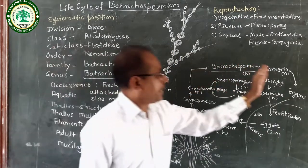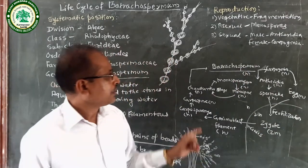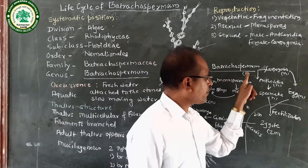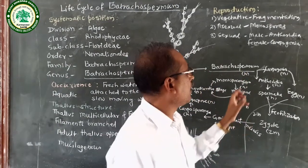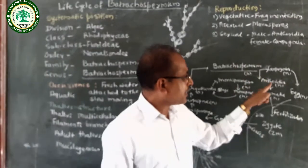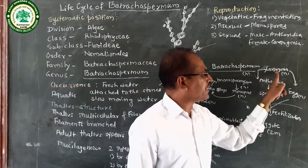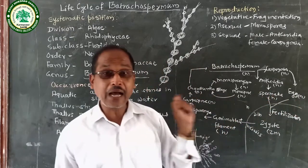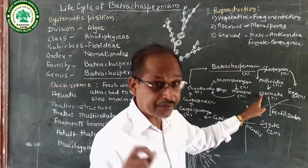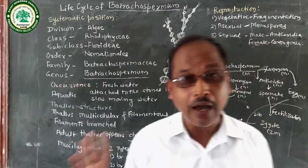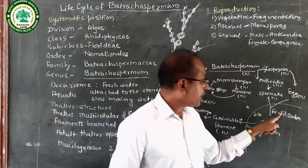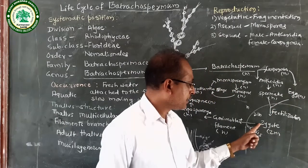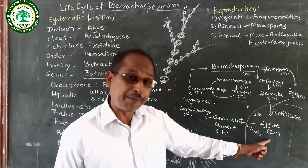This is the life cycle or alternation of generations. Batrachospermum is a haploidic plant. On Batrachospermum there is production of a male reproductive organ called Antheridium and a female reproductive organ called Carpogonium. Antheridium produces spermatia, and Carpogonium produces an egg. The spermatia are uninucleate and non-motile, meaning flagella or cilia are absent. Fertilization takes place, during which the nucleus of the spermatia and the nucleus of the egg fuse together to form a zygote. In the life cycle of Batrachospermum, only the zygote is diploid.